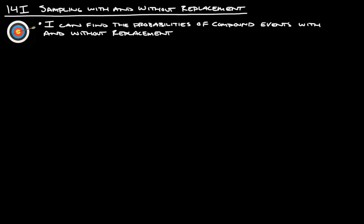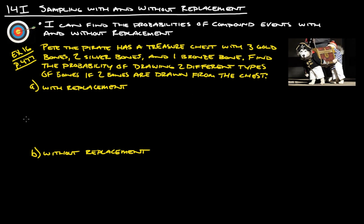Alright, so a couple of examples here. First one is example 16 from page 477. Pete the Pirate has a treasure chest with three gold bones, two silver bones, and one bronze bone. Find the probability of drawing two different types of bones if two bones are drawn from the chest. We're going to figure that out both with replacement and without replacement.